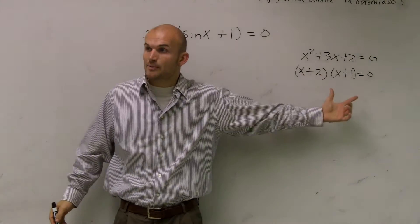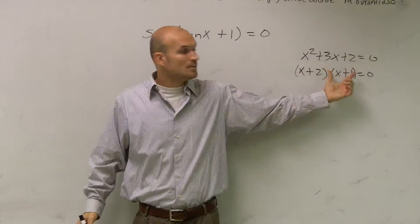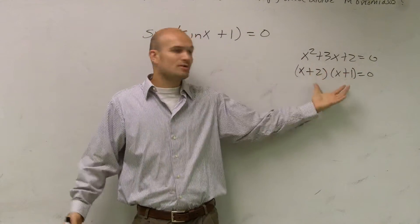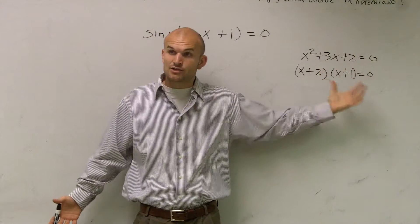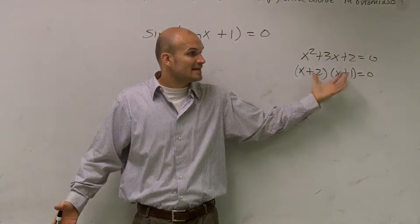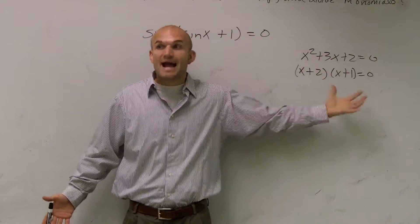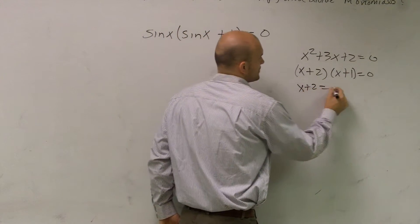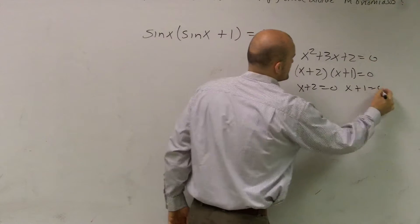And then what we use is the zero product property, saying that if you have two numbers, binomials, whatever, that multiply—two products—and the product equals 0, then one of them has to equal 0. So we say that x+2 = 0 and x+1 = 0.